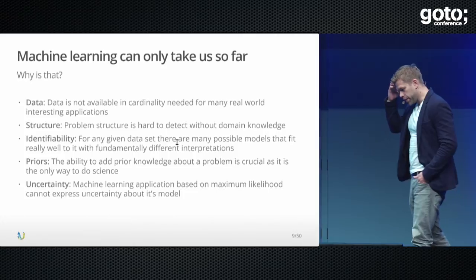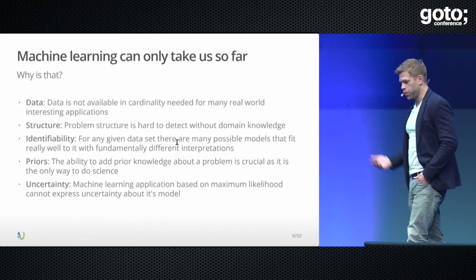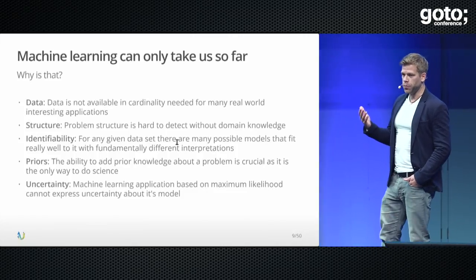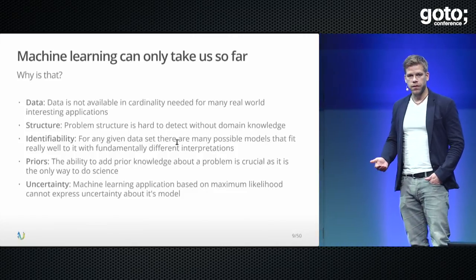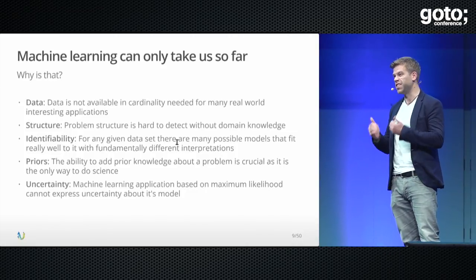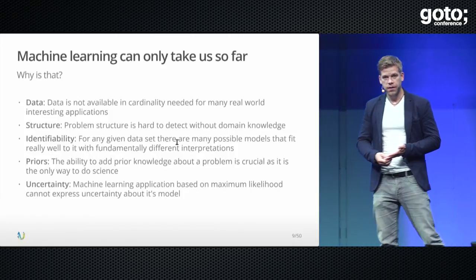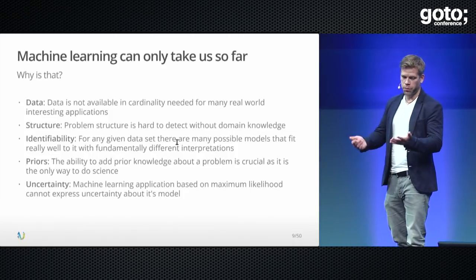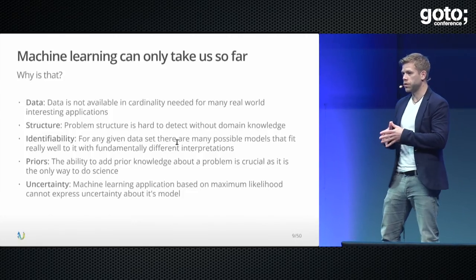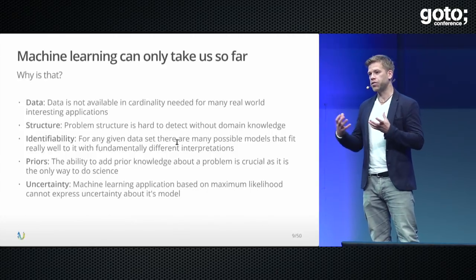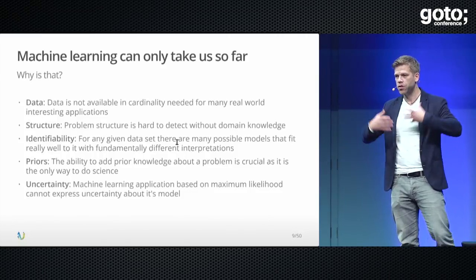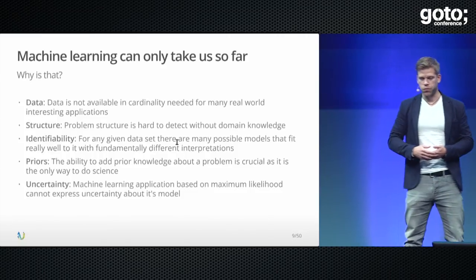The biggest problems in data science today are: first, data is not as ubiquitous as you might think — for many interesting domains there's simply no data, and what exists is exceedingly noisy or based on surveys where people lie. Second, structure: how do you represent a concept in a mathematical structure? Not just in parameter space, but how do you construct your layers in a neural network, for example?